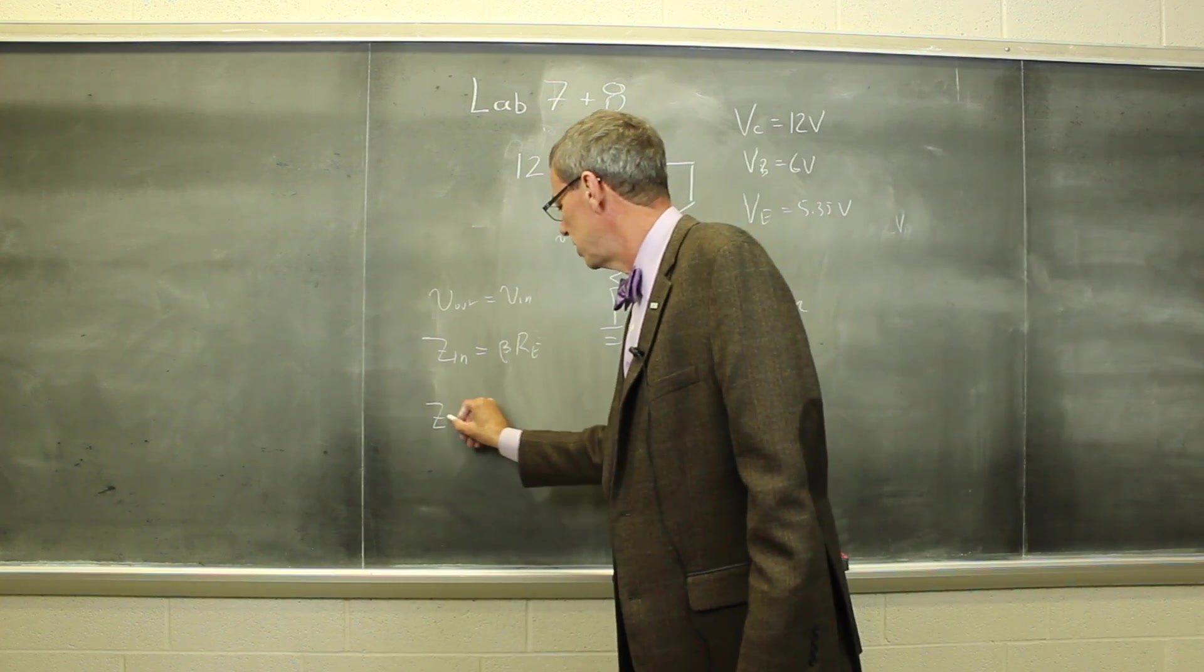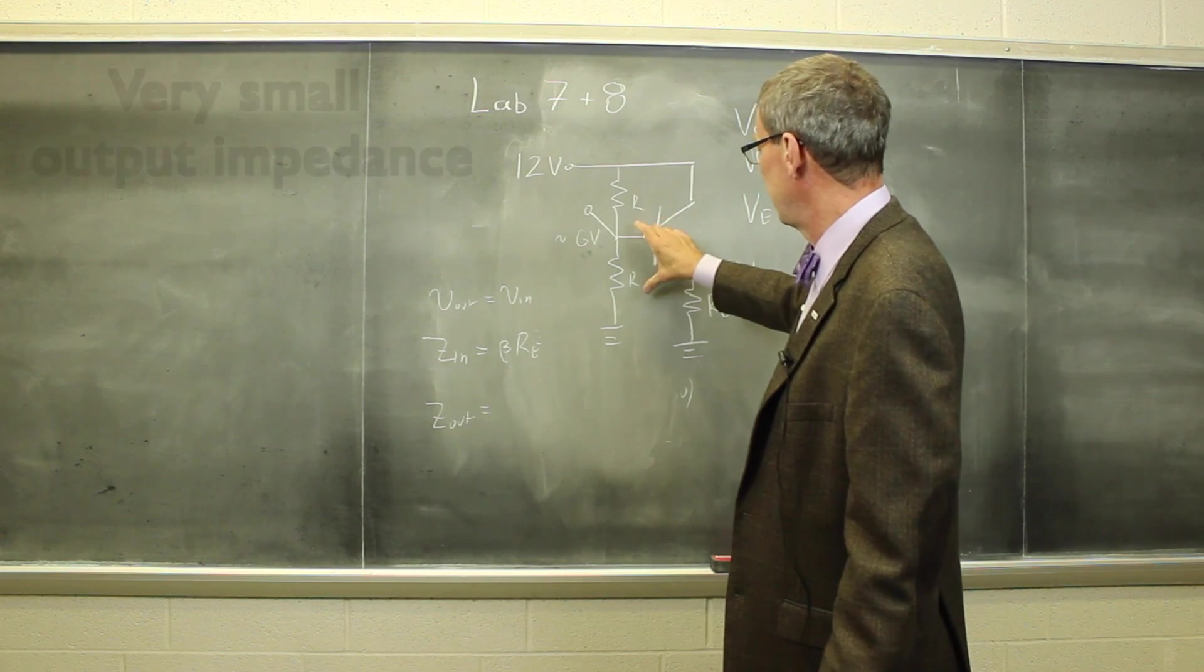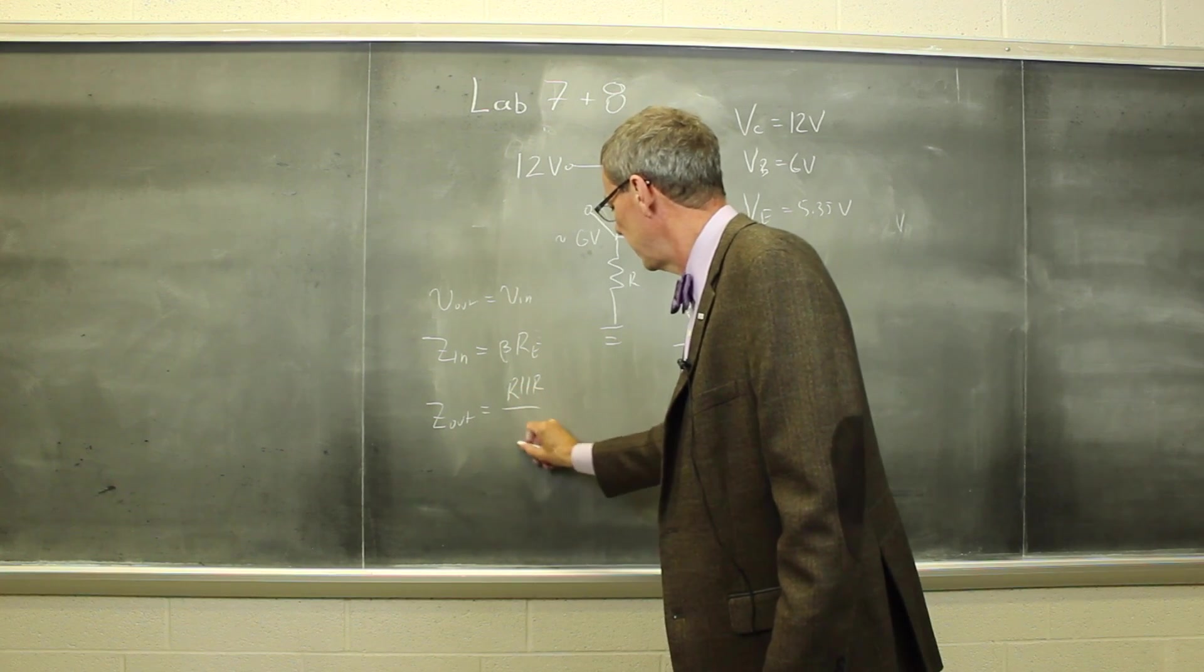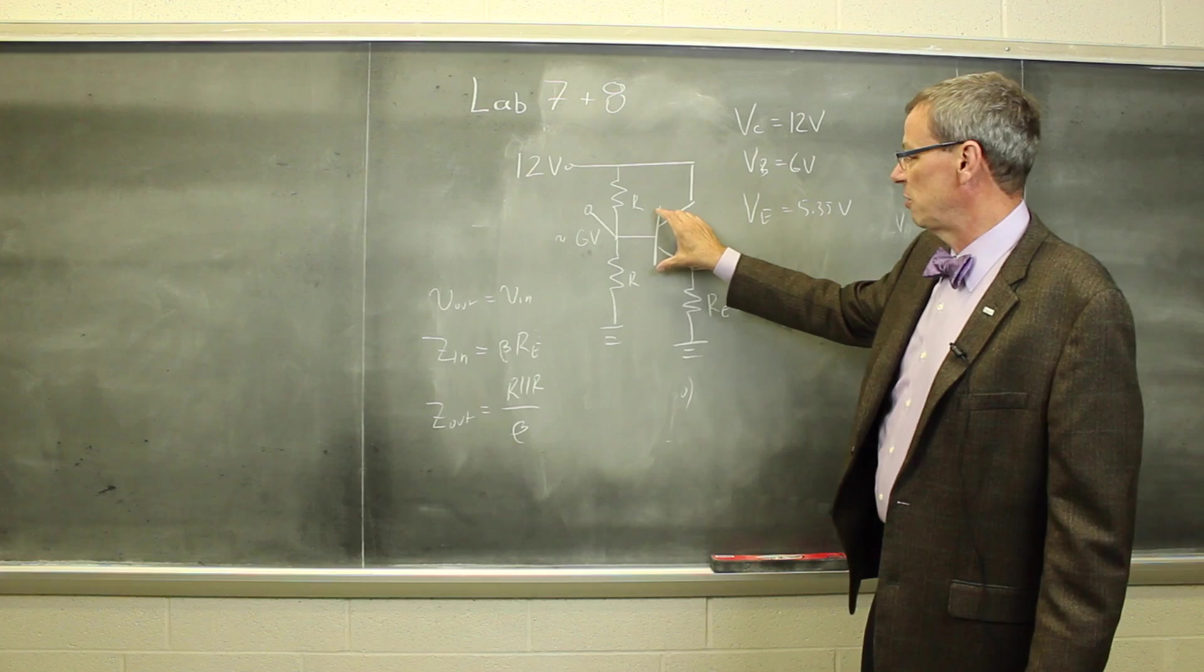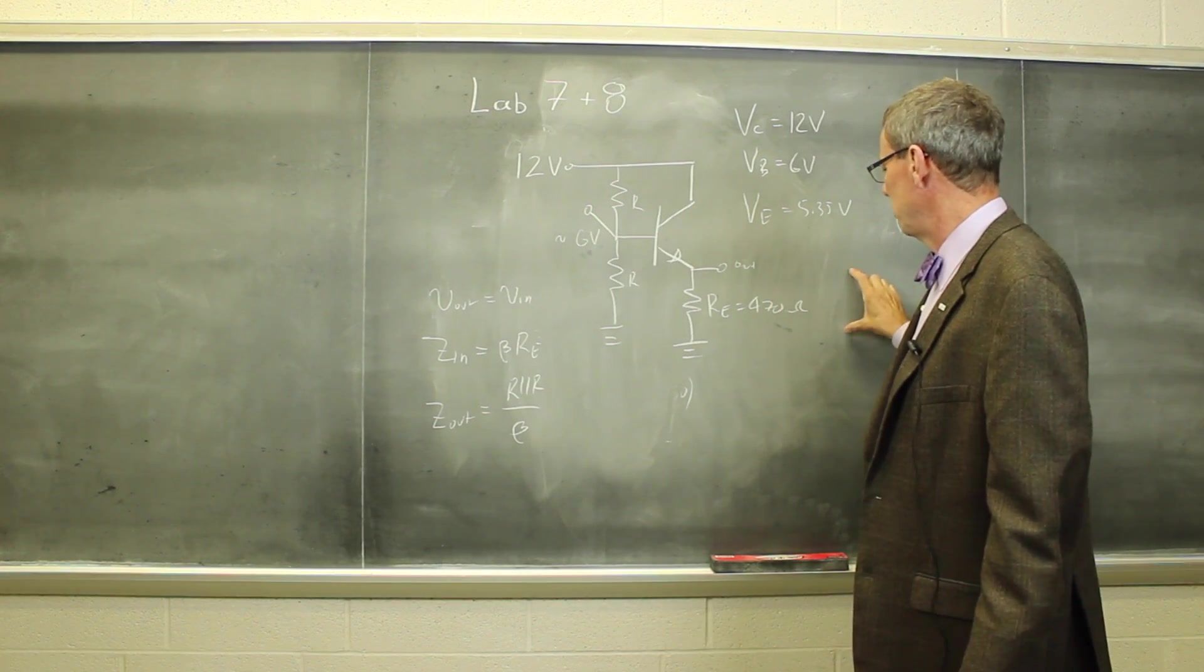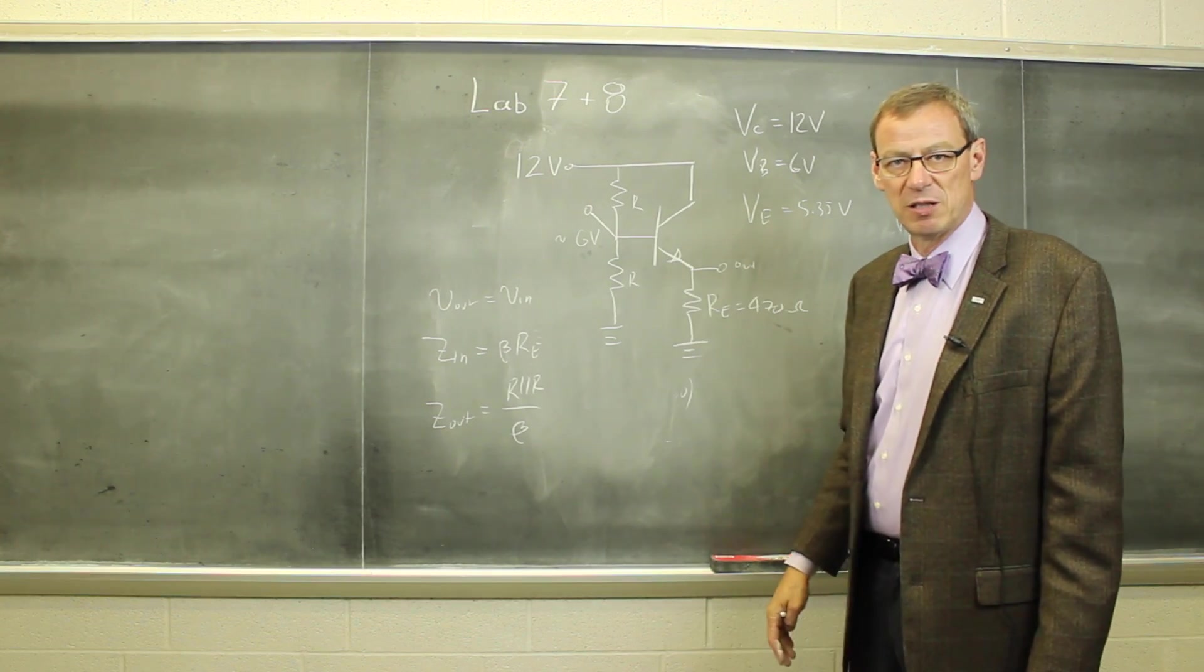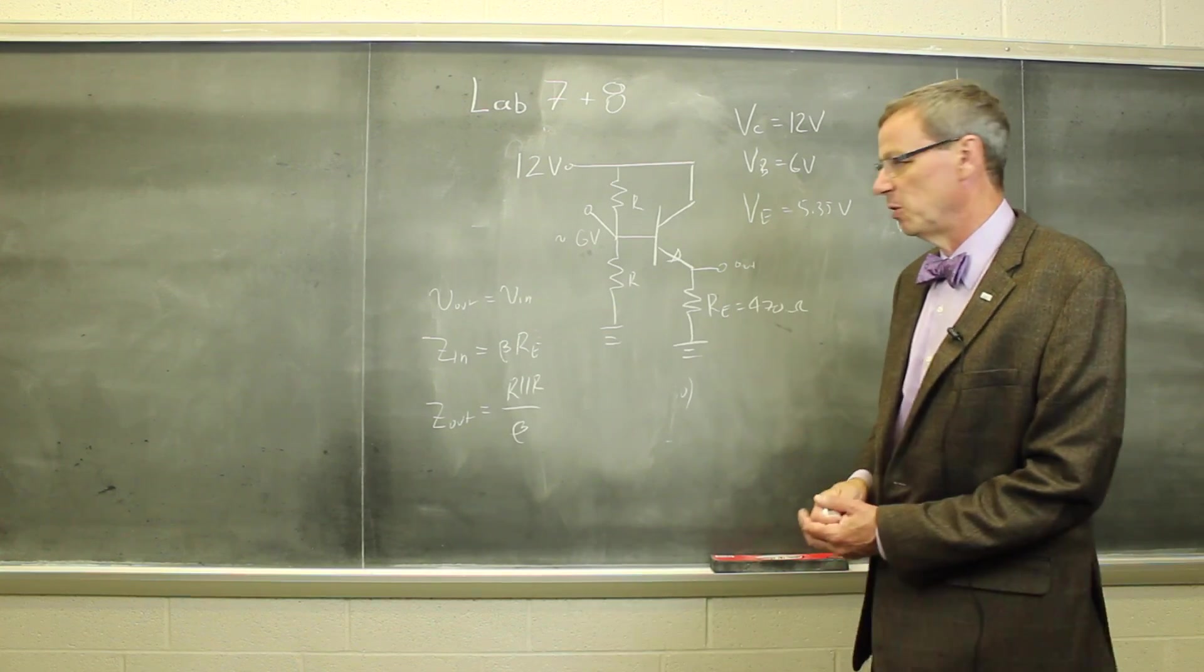The other thing, it has a very small output impedance. So whatever the resistance is back here, in this particular case, it's the voltage divider, R parallel R, divided by that beta. So that tends to be a very small number. So whatever this circuit is, it doesn't load down very much what's back here. And whatever is out here cannot load down the output of this transistor circuit. So that's good, it matches the impedance and sends a copy of the voltage through.